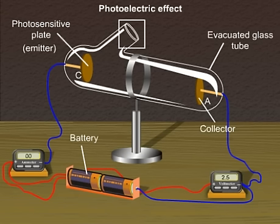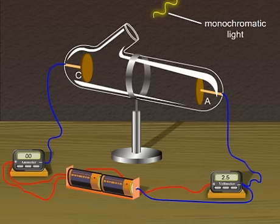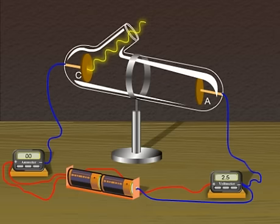It's a transparent quartz window which permits ultraviolet radiation to pass through it and irradiate the emitter. Now monochromatic light from a source of sufficiently short wavelength passes through this window and falls on the photosensitive plate, C.